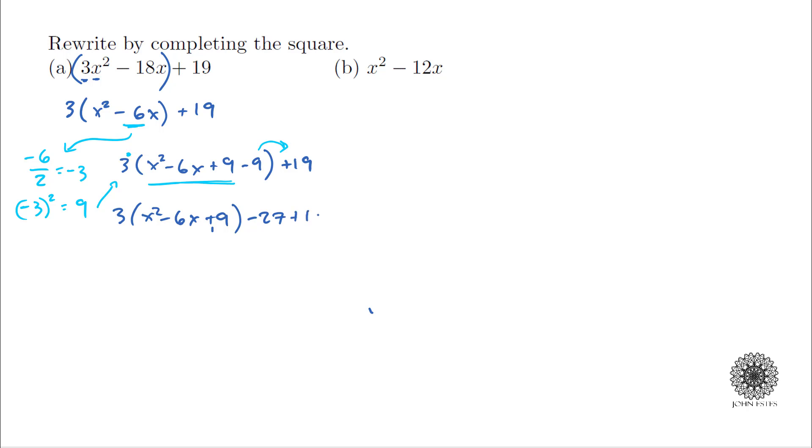Now I'm free to factor this middle part so I have 3 times x minus 3 quantity squared. That's the neat thing about completing the square: as the name implies you will always have something quantity squared. So I have 3 times x minus 3 quantity squared minus 8.